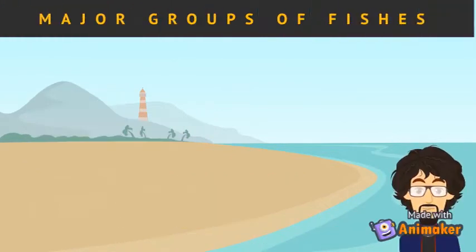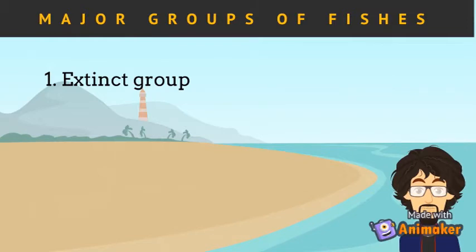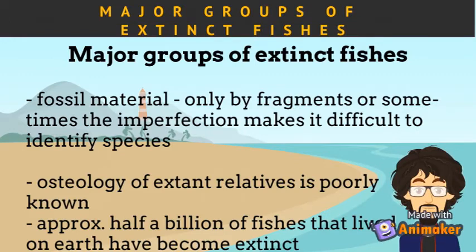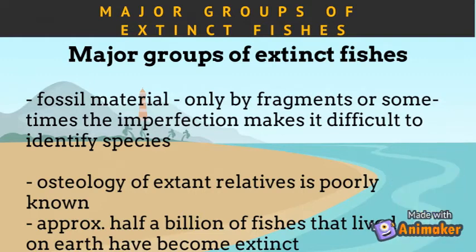There are two major groups of fishes: the group of extinct fishes and the group of extant or living fishes. Much of the fossil material is represented only by fragments that are often impossible to identify to species, mainly because the osteology of extant relatives is poorly known. Imperfection of fossil records causes the delimitation and precise positioning difficult. Approximately half a billion fishes that lived on Earth have become extinct.